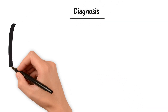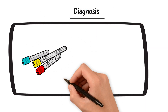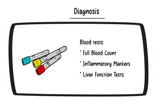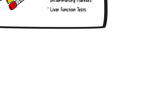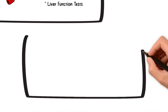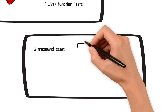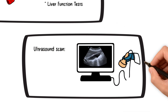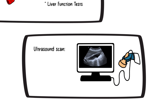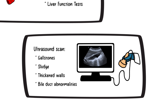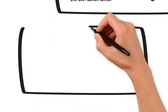Diagnosing acute cholecystitis involves a series of steps. Blood tests such as full blood count, raised inflammatory markers, and deranged liver function tests help gauge the severity of inflammation and potential complications. An ultrasound scan is the first choice for imaging, detecting gallstones and other abnormalities such as presence of sludge, thickened gallbladder walls, bile duct dilatation, or pericholecystic fluid collections.